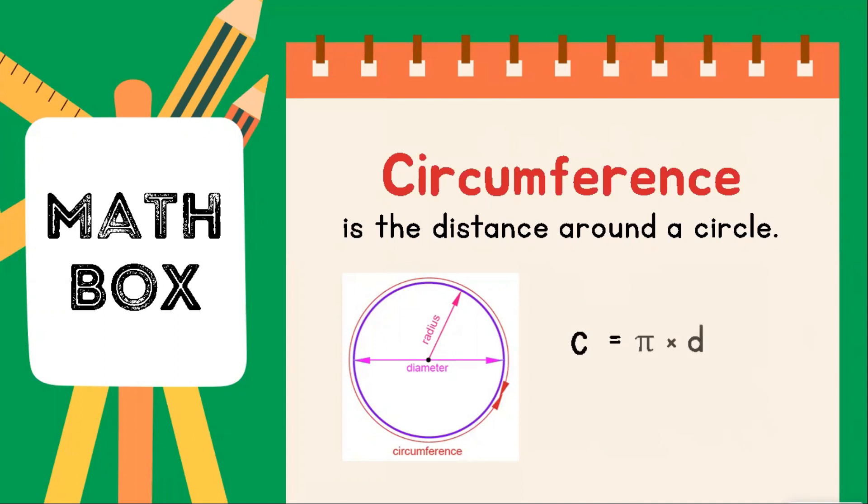Circumference is the distance around a circle. It can be solved using this given formula. If the diameter is provided, we can say that the circumference of the circle is equal to pi times d, where d stands for the diameter.